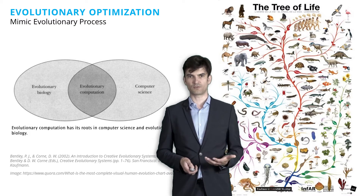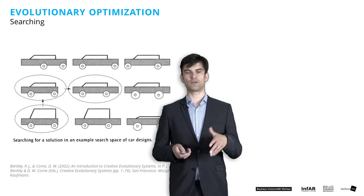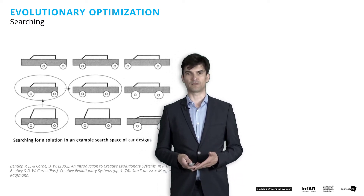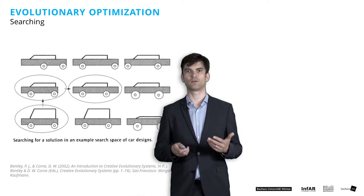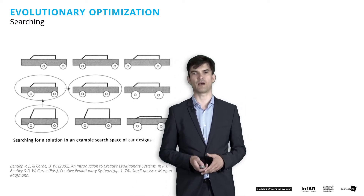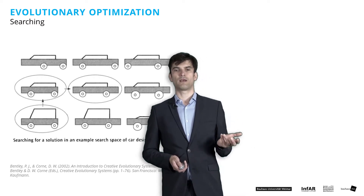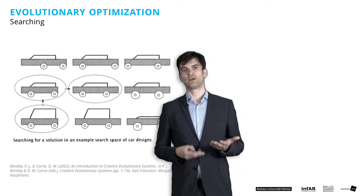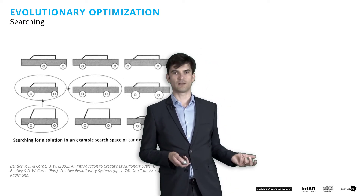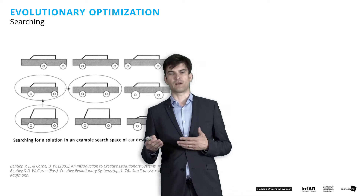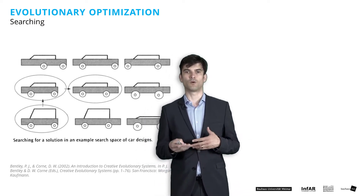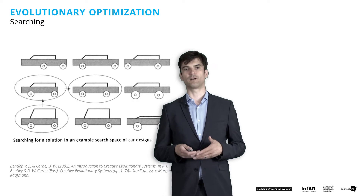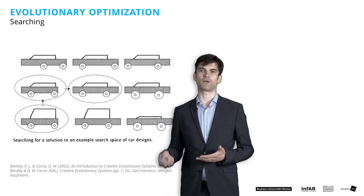This kind of search process means we need to formulate what we are looking for, and the algorithm tries to help us find the optimal design. In the example you see behind me — the design of cars — the marked designs are the selected best ones. We can do this manually by saying these designs are the most beautiful ones or the ones we prefer, or we can implement a measure such as the best aerodynamic performance.